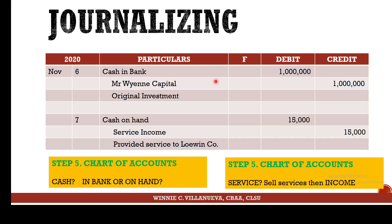That's how your journal page 1 will look. Your journal should look neat and not crowded — put a space after each entry. In terms of the month, if you are on the same page and it's the same month, you don't write the month every time. Only write the month again if it's a different month on the same page.